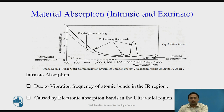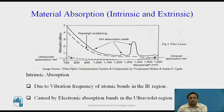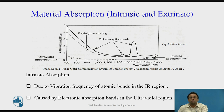Material absorption is due to the vibration frequency of atomic bonds in the infrared (IR) region, and is also caused by electronic absorption bands in the ultraviolet (UV) region. This graph shows fiber losses due to absorption. Intrinsic absorption is caused by basic fiber material properties. If optical fibers were absolutely pure with no imperfections or impurities, all absorption would be intrinsic. Silica fibers are used because of their low intrinsic material absorption at the wavelengths of operation.